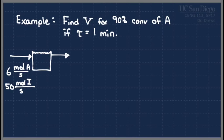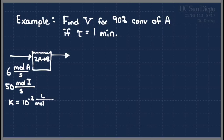The reaction going on inside is elementary: 2A → B. The rate constant K is 10⁻² liters per mole per second — those units arise because it's a second-order reaction. Keep in mind that tau has units and is not dimensionless, so units matter. Since all my flow rates are in seconds but tau is in minutes, we need to convert — tau equals 60 seconds — so that going forward I've already done the unit conversion and don't have to think about it again.